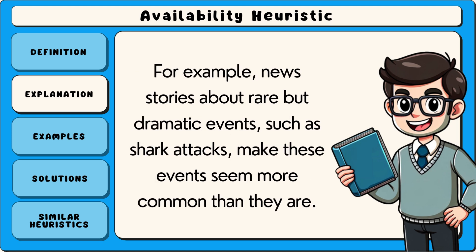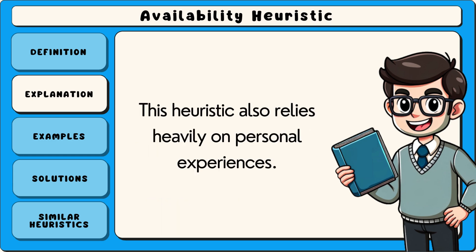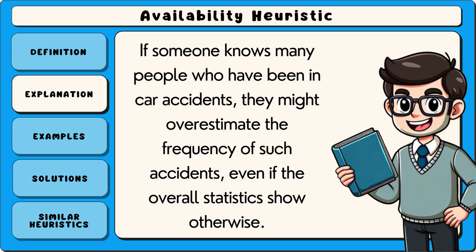For example, news stories about rare but dramatic events such as shark attacks make these events seem more common than they are. This heuristic also relies heavily on personal experiences. If someone knows many people who have been in car accidents, they might overestimate the frequency of such accidents, even if the overall statistics show otherwise.